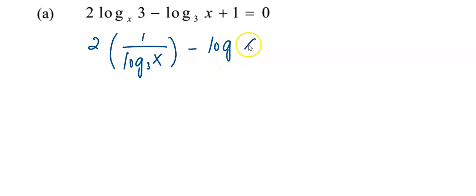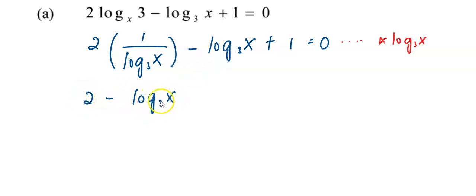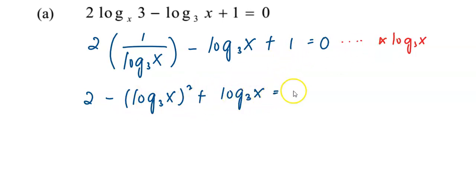The second term will remain log base 3 of x, plus 1 equals 0. After that, we're going to multiply all the terms by log base 3 of x. The first term will become 2. The second term will become log base 3 of x, squared, plus 1 multiplied by log base 3 of x, which gives log base 3 of x.